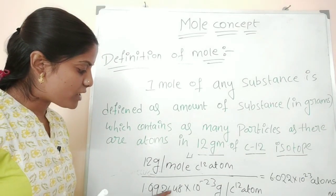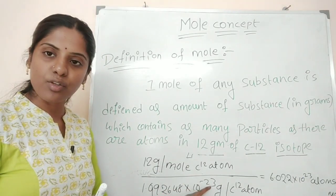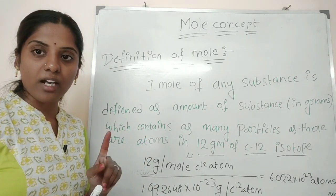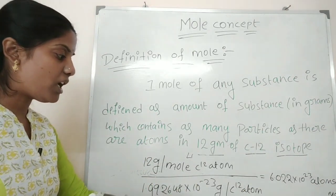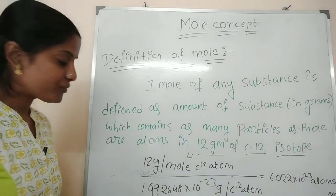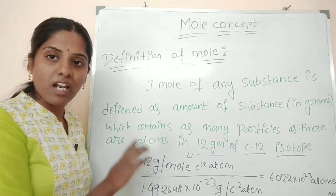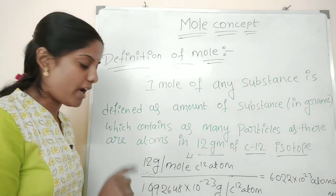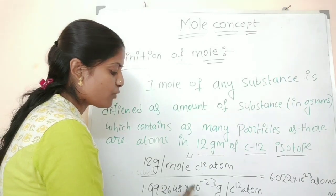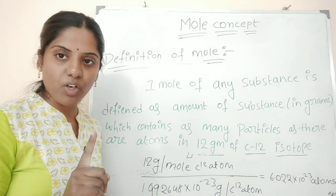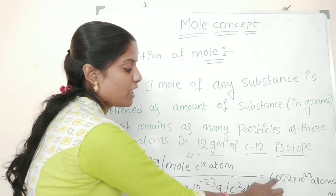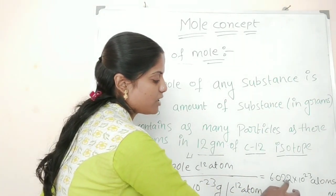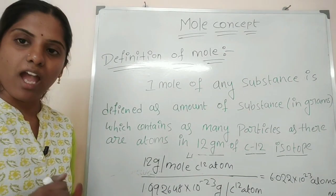The mass of 1 atom is 1.992648 × 10⁻²³ grams per atom. The total mass is 12 grams, which corresponds to 1 mole of atoms.